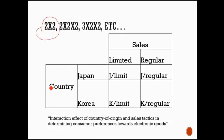So this is what is referred to in experimental terms as a two by two design, okay, where you have two independent variables, each have two levels of manipulation, okay, so like we said, we have Japan limited, Japan regular, and then we have Korea limited, Korea regular.